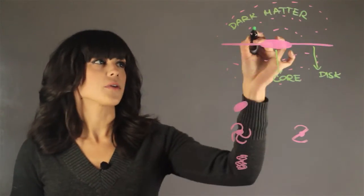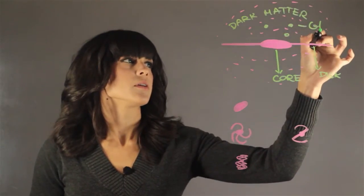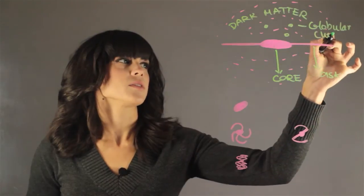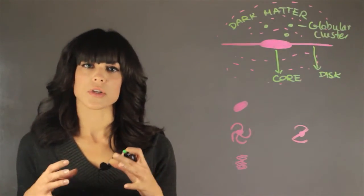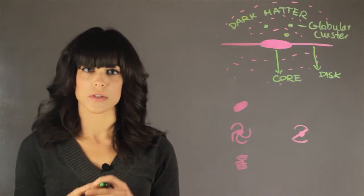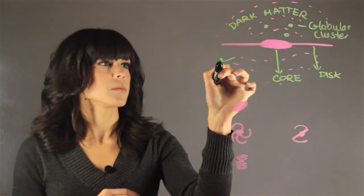It contains also these things called globular clusters. And what these are is like these really old, large collections of stars. Thousands of stars, very old, that have been lost in the halo.